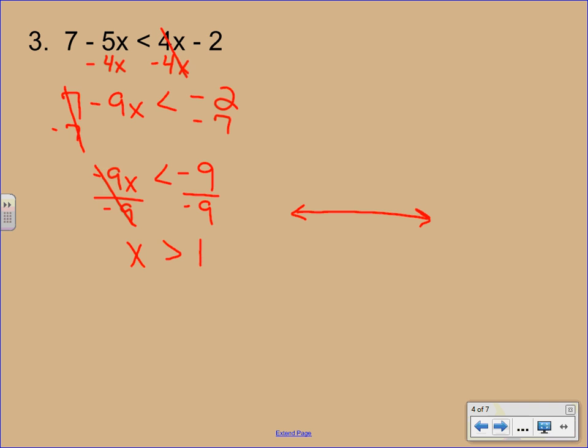Always got to graph your solution here because an inequality doesn't just have one answer. It has a lot of answers. So the solution here is anything that's greater than 1. So you could plug a 2 in, a 3 in, a 4 in, and any of those values would make the inequality true.